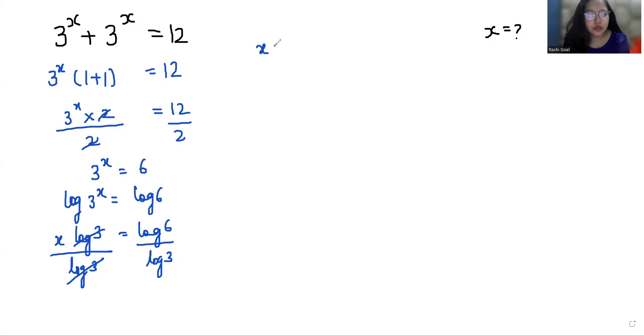If I divide both sides by log 3, x equals log 6 by log 3. Now this log 6, this 6 I can write as 3 times 2 by log 3. And according to log rule, log(a times b) we can write as log a plus log b.